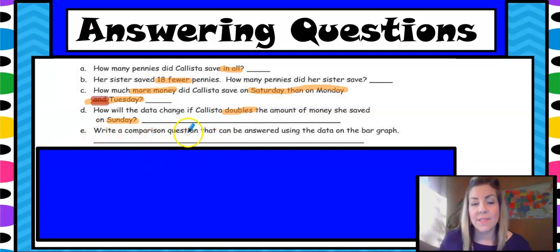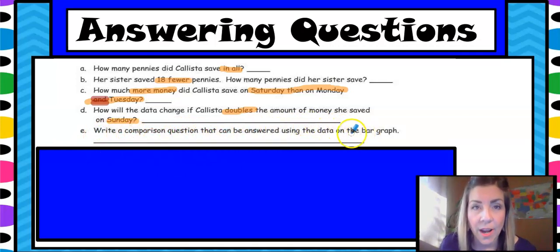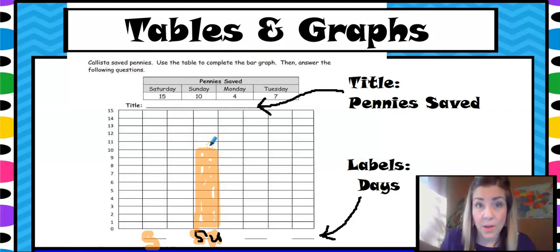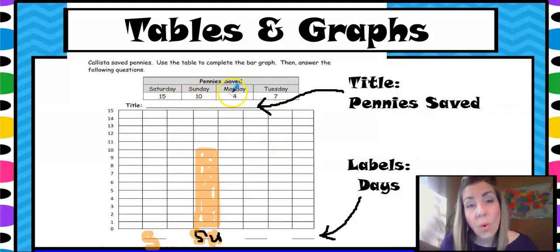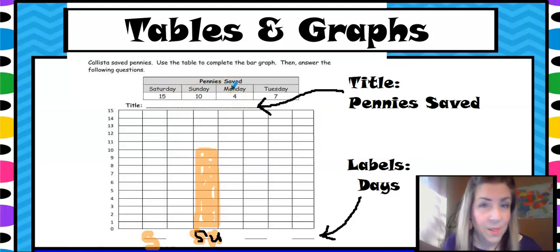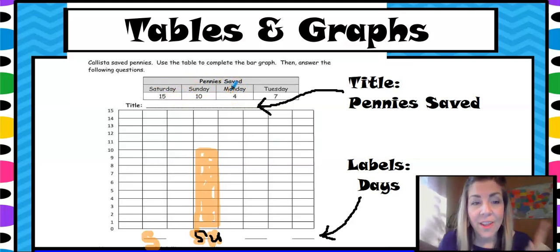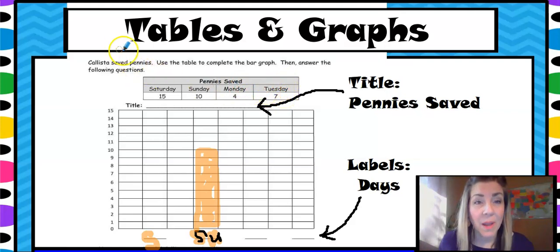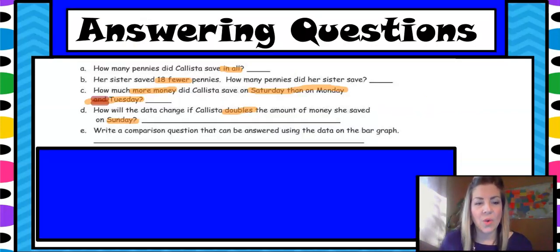E says: write a comparison statement that can be answered using the data on the bar graph. You would go back to your bar graph and say, what two things do I want to compare? You could compare Monday to Tuesday, Saturday to Monday, or you could even go a little farther — you could do how much more did she save on Saturday and Sunday compared to Monday and Tuesday? That would be a three-step problem. Write your comparison question here for whatever you want.